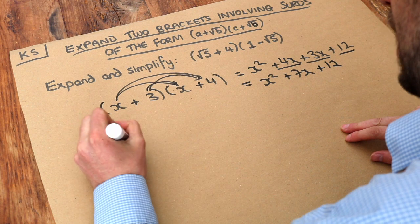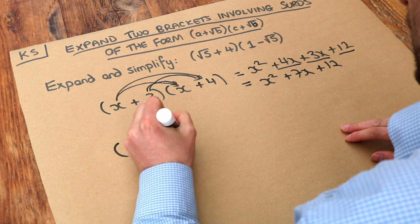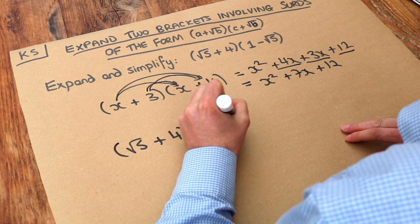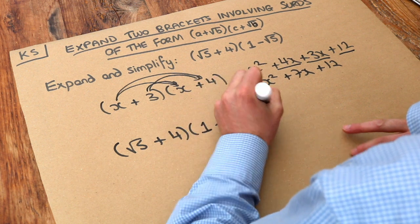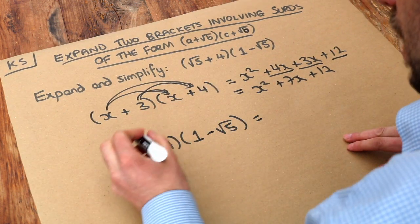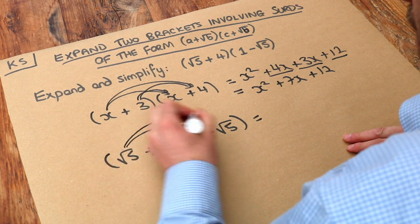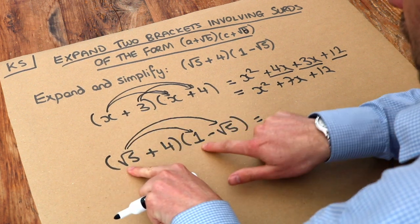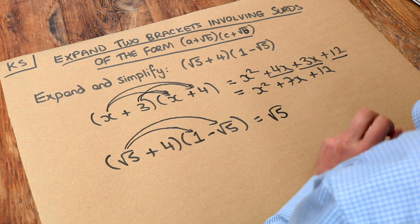So let's apply that same principle to expanding with these surds and use our knowledge of multiplying surds together. So we're going to do the root 5 times each of the things in the second bracket first. So the root 5 times the 1 is just root 5. One lot of root 5 is root 5.